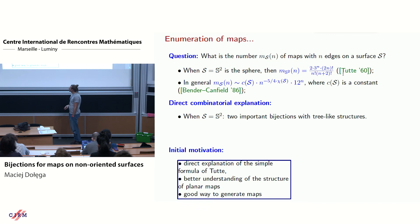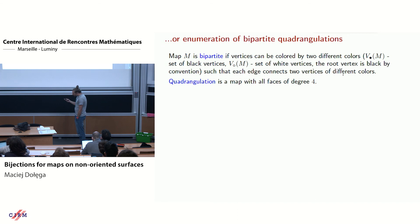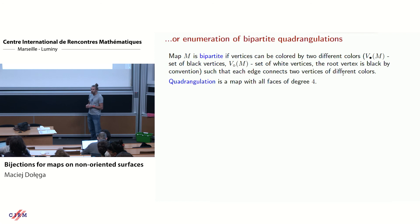The initial motivation for studying these bijections was to understand these objects and explain nice enumerative results. Another thing is that maps are quite complicated while trees are very easy objects, so if you know there is a bijection with trees it's very useful for generating maps. The first observation is that instead of counting maps with n edges, you can count bipartite quadrangulations with n faces.